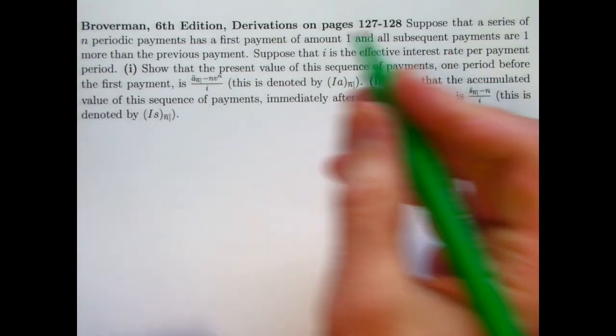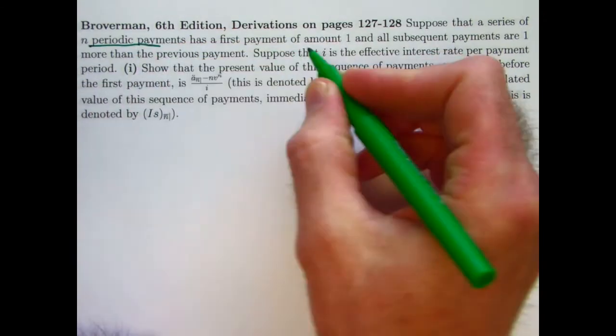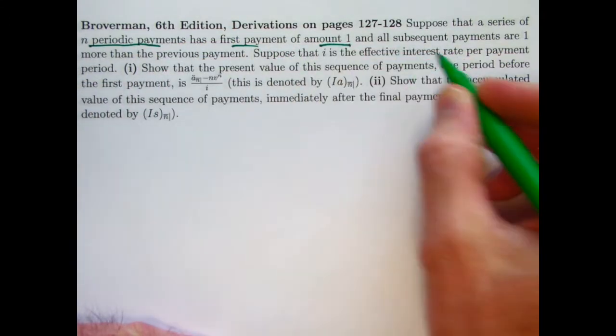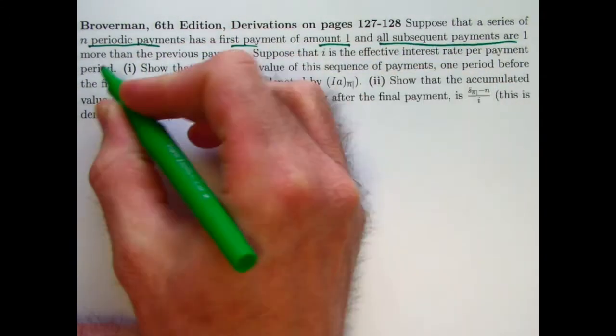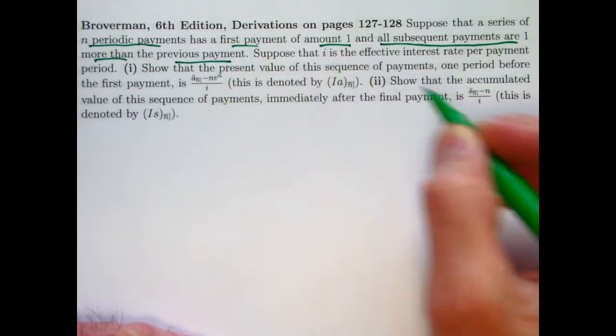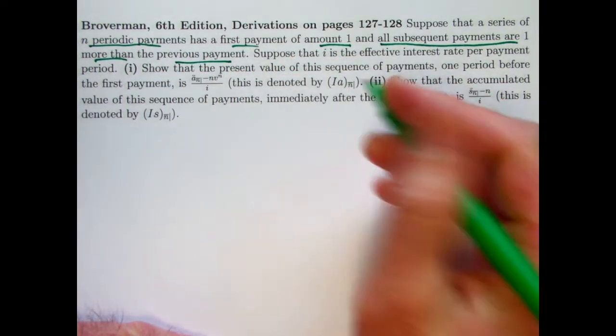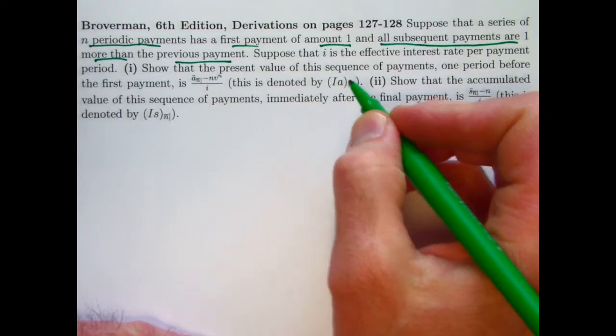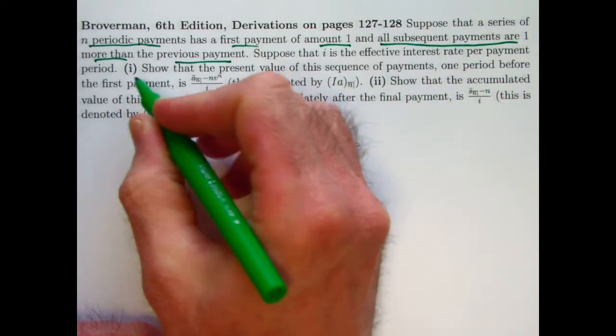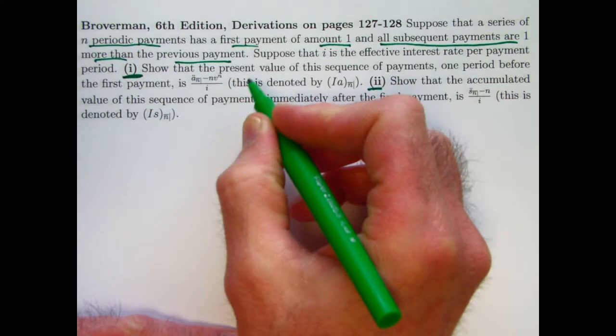So suppose we have a series of n periodic payments, first payment of amount 1, and all subsequent payments are 1 more than the previous payment. That's what makes this arithmetic. Suppose that i is the effective interest rate per payment period, and there's two derivations to do.